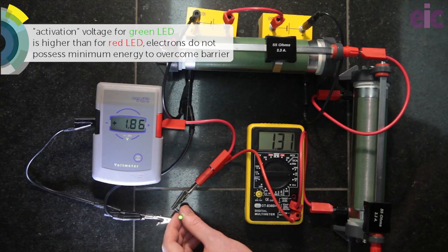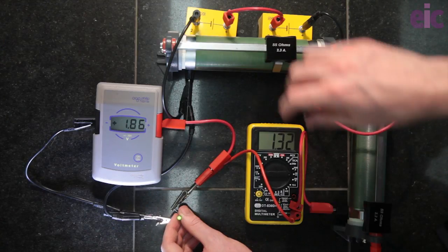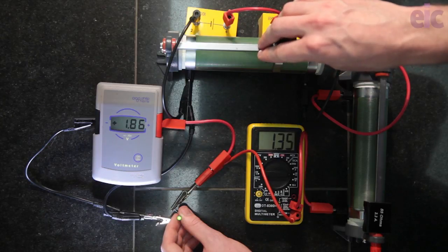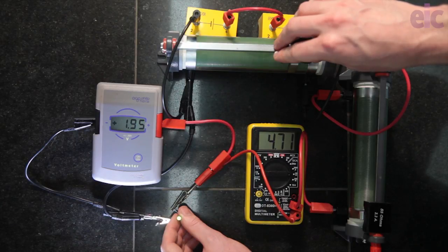This demonstrates that lower frequencies are associated with less energy, and that if the minimum energy criteria for the transition isn't met, electrons can't jump the energy barrier. As you increase the voltage, the current increases proportionally, and the LED gets brighter as more and more electrons possess the necessary energy to make the jump.